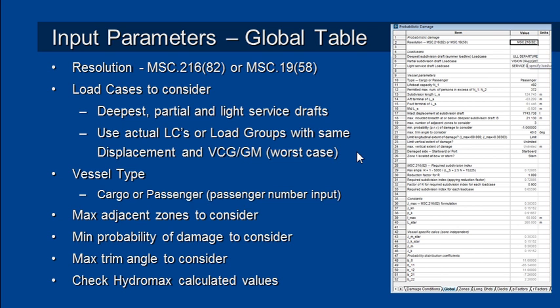You should use whichever of those gives you the worst case — it's often the load group with the empty tanks that will give you the worst case. You should also choose the type of vessel: cargo or passenger. There are also parameters to enter for the number of adjacent zones to consider.